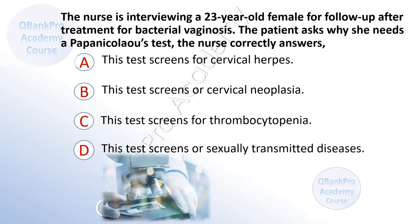The nurse is interviewing a 23-year-old female for follow-up after treatment for bacterial vaginosis. The patient asks why she needs a pap smear test. The nurse correctly answers: A. This test screens for cervical herpes. B. This test screens for cervical neoplasm. C. This test screens for thrombocytopenia. D. This test screens for sexually transmitted diseases.